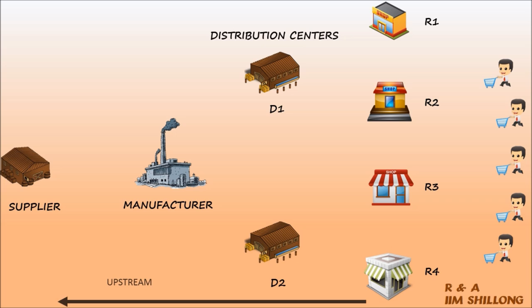In a supply chain, there are two main channels. One, the information flow or the upstream. Two, the goods flow or the downstream.